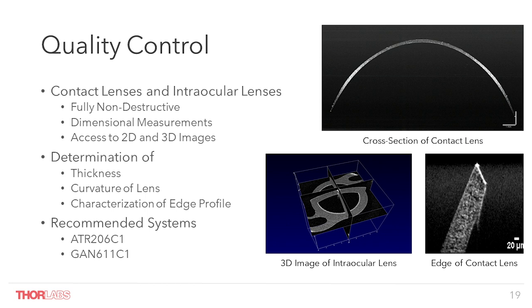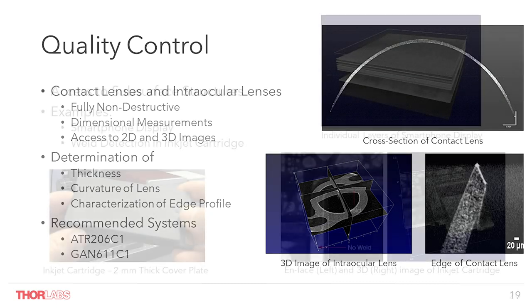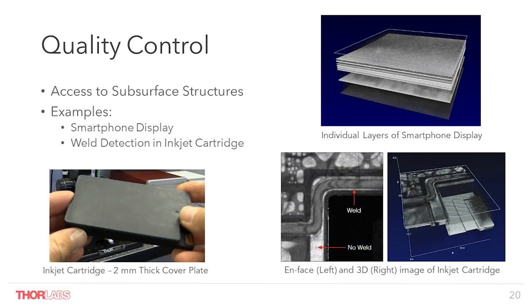An already quite well-established application of OCT is its use as a quality control tool for contact and intraocular lenses. With OCT we can get high-sensitivity images of these normally quite transparent devices, and this allows dimensional measurements to be taken in an automated way — for example, analyzing the thickness and curvature of contact lenses. If we zoom in with a high-resolution setup, we are also able to get a good impression of what the lens edges look like.